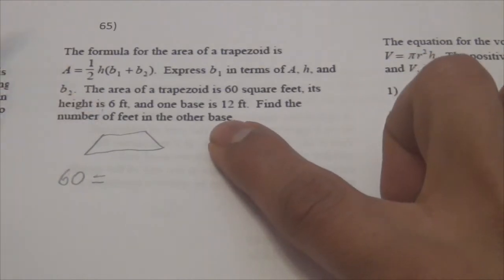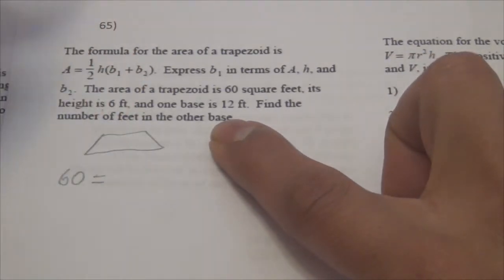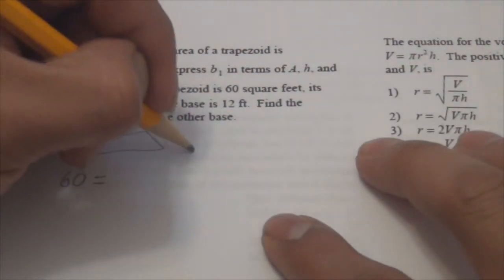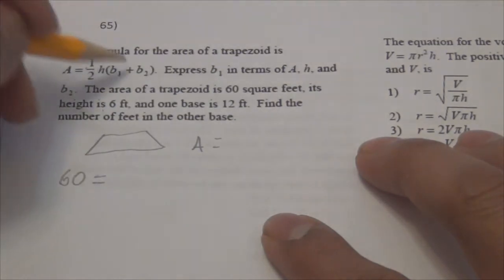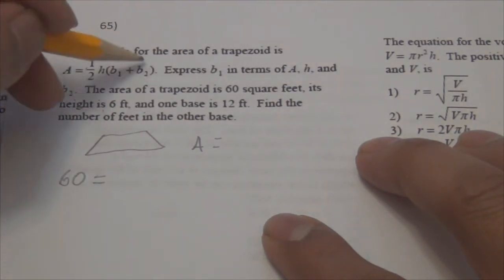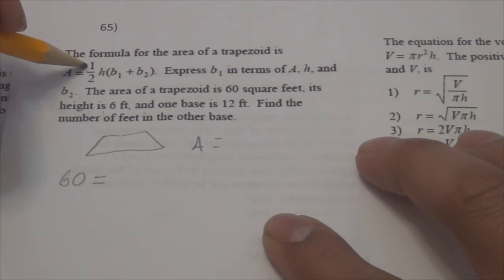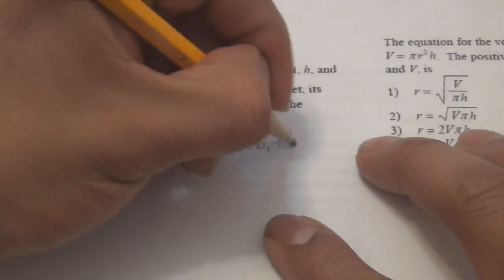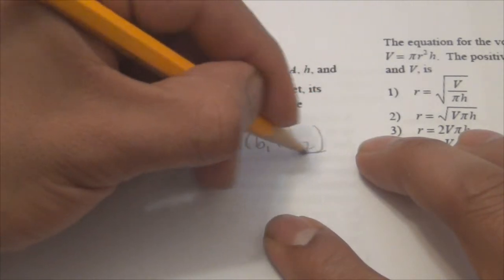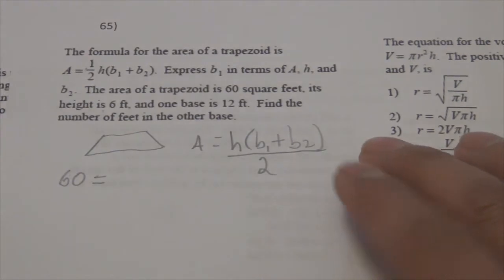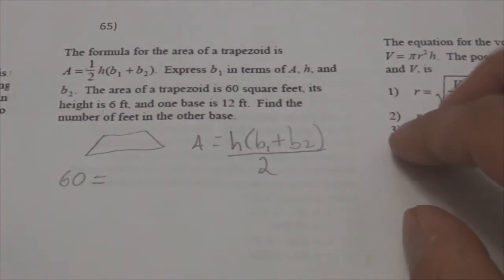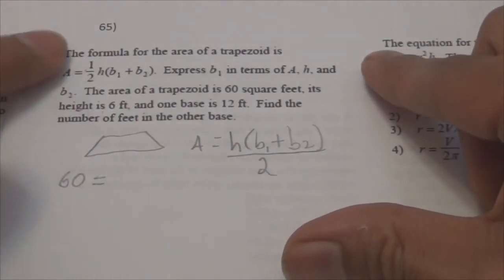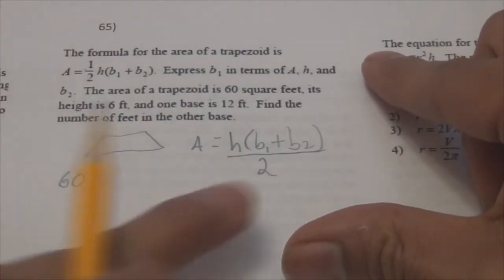Its height is 6 feet. This formula can be rewritten as area equals height times (b1 + b2) over 2, because multiplying by 1/2 is the same thing as dividing by 2. This is more user friendly. So 60 equals — and I'm going to use this version — because I'd rather divide by 2 than multiply by a half.